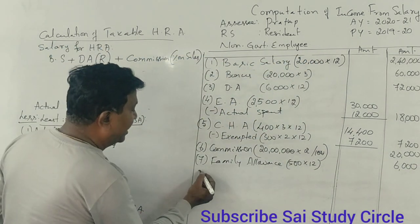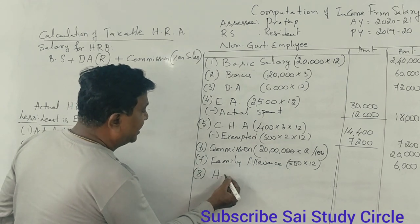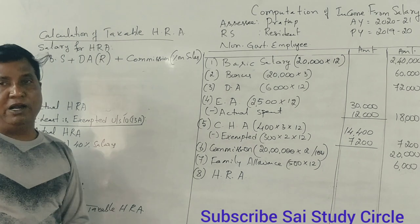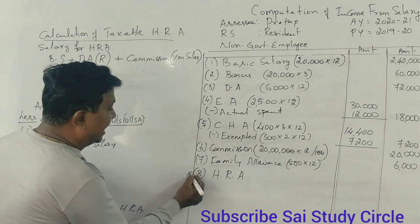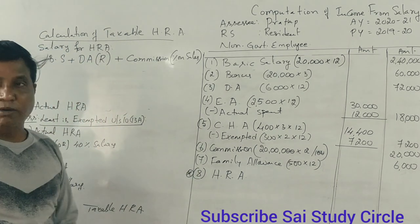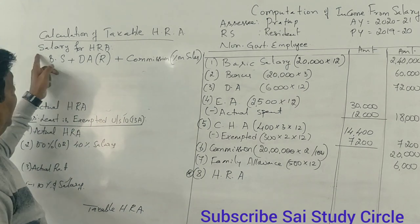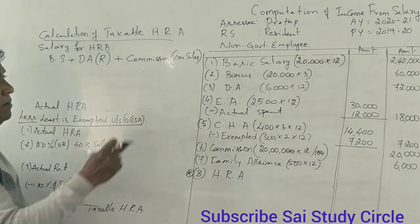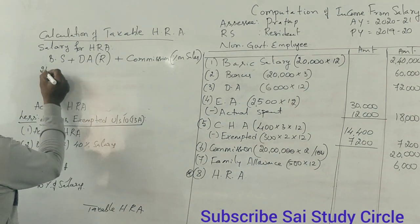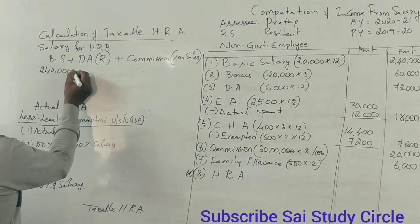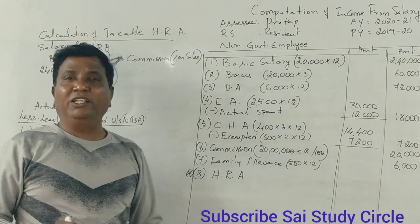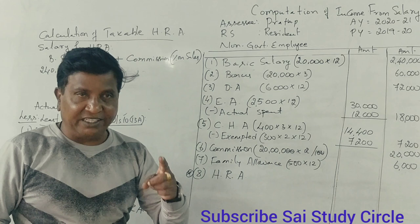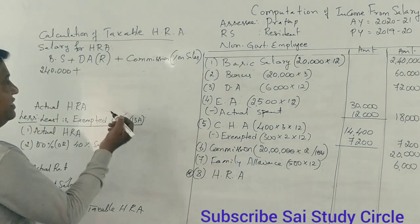Next point: House Rent Allowance. HRA is Rs. 6,000 per month. Now for the calculation of taxable HRA: first, basic salary is Rs. 2,40,000. DA forming part of salary is Rs. 72,000, giving a total salary for HRA purposes.